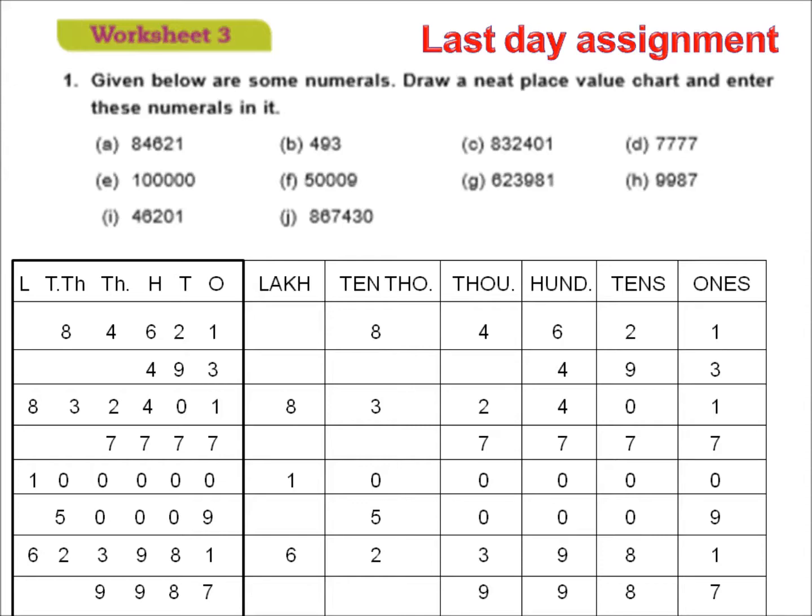Now, the question is 84,621. So, 8 will be at the place of 10,000, 4 will be at the place of 1000, 6 at the place of 100, 2 at the place of 10s, and 1 at the place of 1s. Next one, 493. So, 4 will be at the place of 100, 9 will be at the place of 10s and 3 will be at the place of 1s.